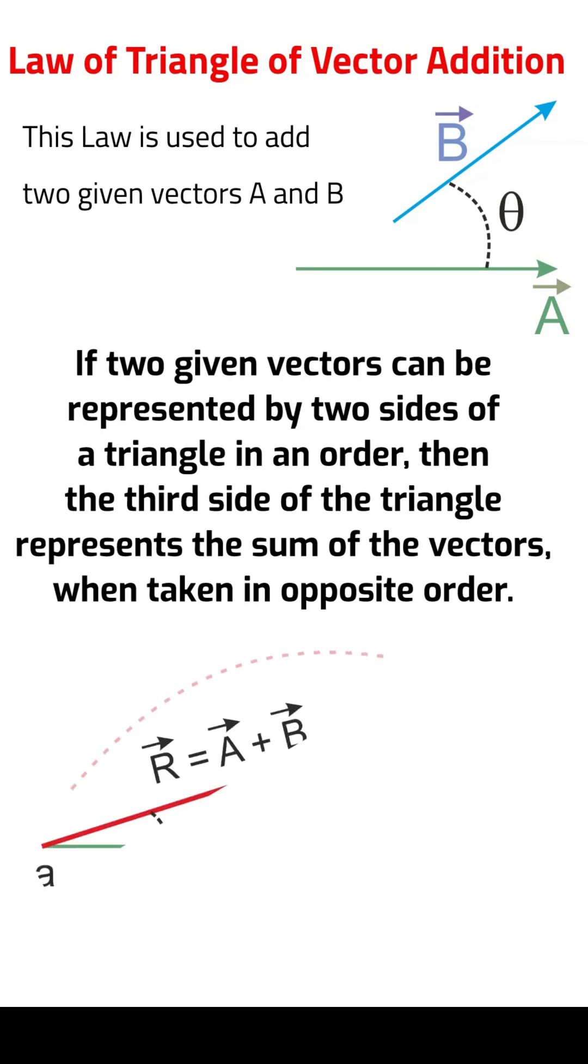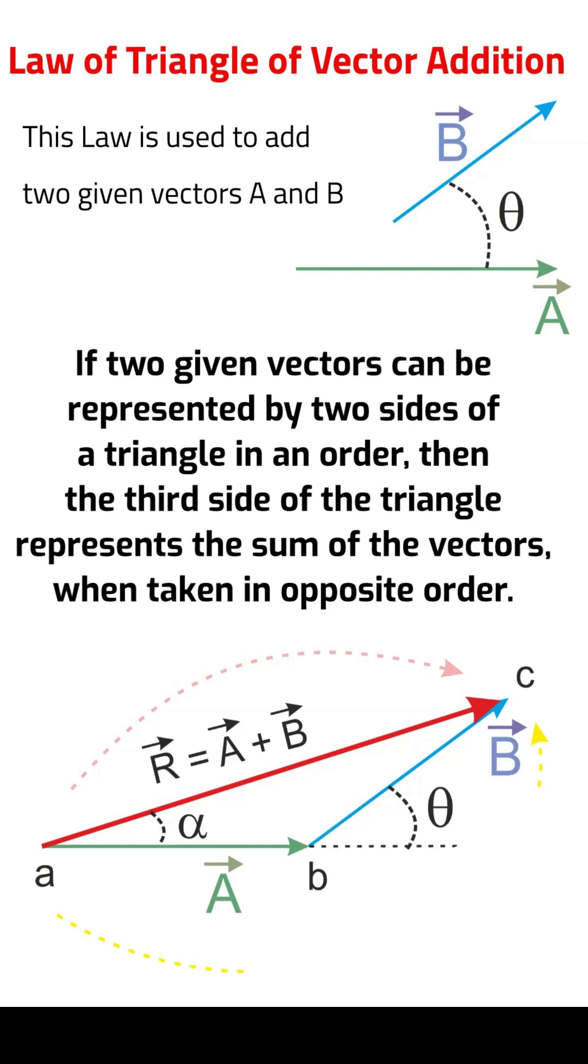This is the diagrammatic representation of the law of triangle. Here A and B are in anti-clockwise order whereas R is in clockwise order.